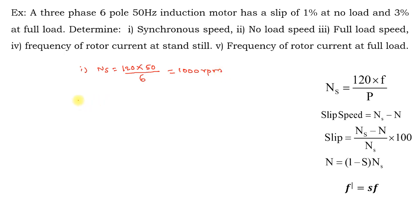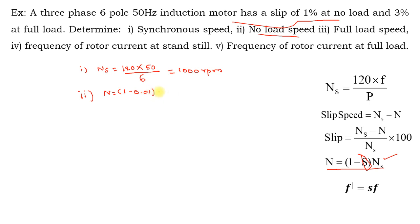Second, find no-load speed. The formula n = (1 − s) × ns applies. The motor has 1% slip at no load, so s = 0.01. Therefore no-load speed = (1 − 0.01) × 1000 = 990 rpm.